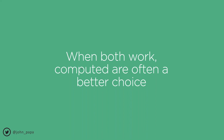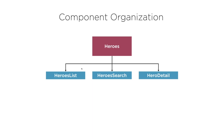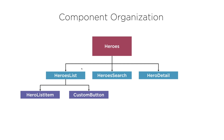One of the last pieces before building an app is component organization. Everything we've done so far could live in a single component, but most real apps have many components. For example, a heroes feature might have a list component, a search component, and a hero detail component — and the list component might have a list-item component and a custom button component. You can build a large component tree structure this way.